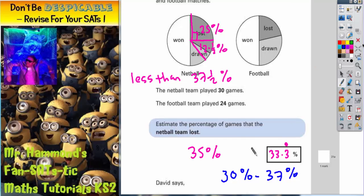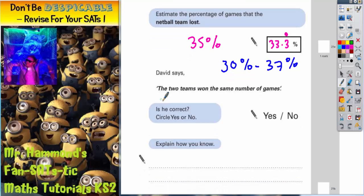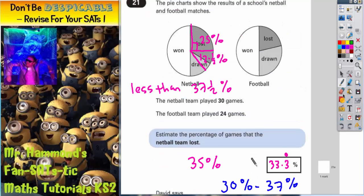If we scroll down for the second part of the question, it says, David says the two teams won the same number of games. Is it correct? Circle yes or no. Well, if you look at the pie chart, let's just get rid of this working here. If you look at the pie chart,